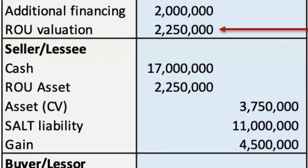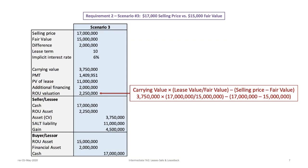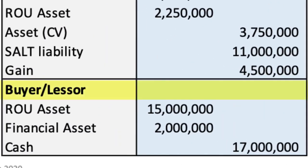For the seller-lessee journal entry, debit cash for the $17,000,000 selling price and debit the ROU asset account for the $2,250,000 calculated ROU valuation. Credit the asset's carrying value for $3,750,000, credit the SALT liability account for the $11,000,000 present value of the lease, and record a $4,500,000 gain as the remaining credit. For the lessor-buyer entry, debit the ROU asset for the $15,000,000 fair value, credit cash for the $17,000,000 paid, and debit the $2,000,000 difference to a financial asset account.